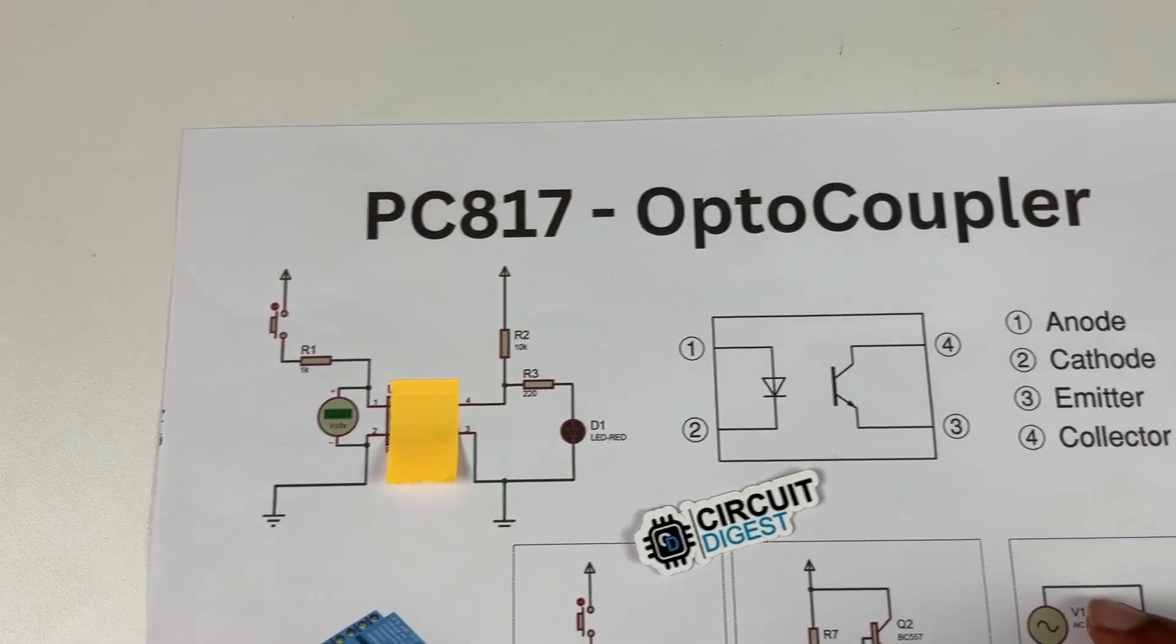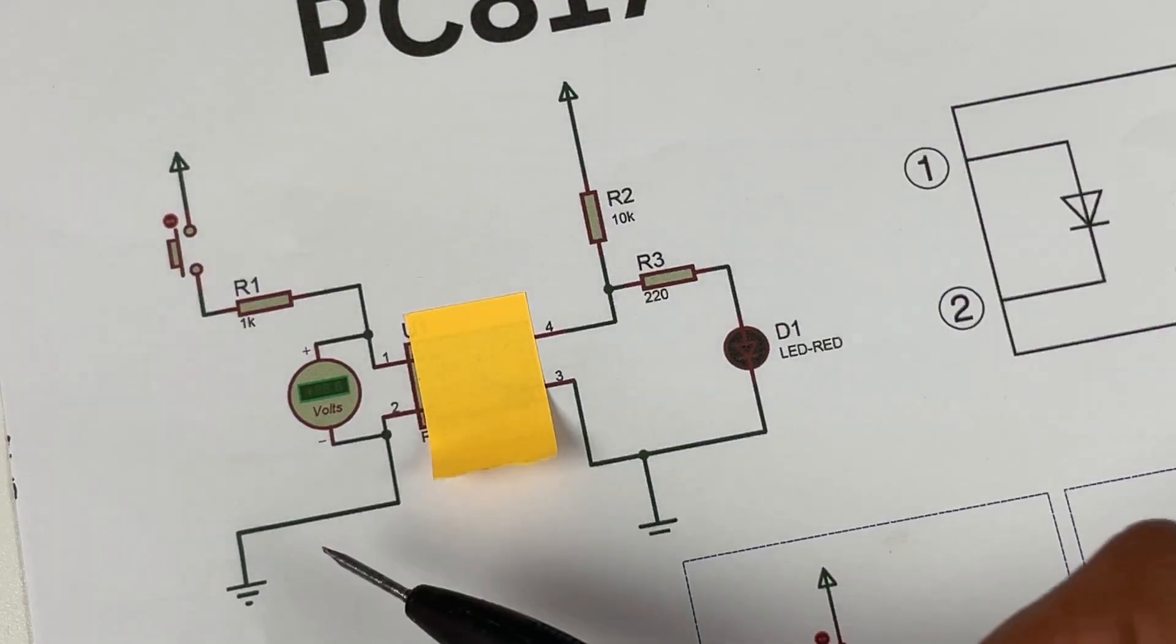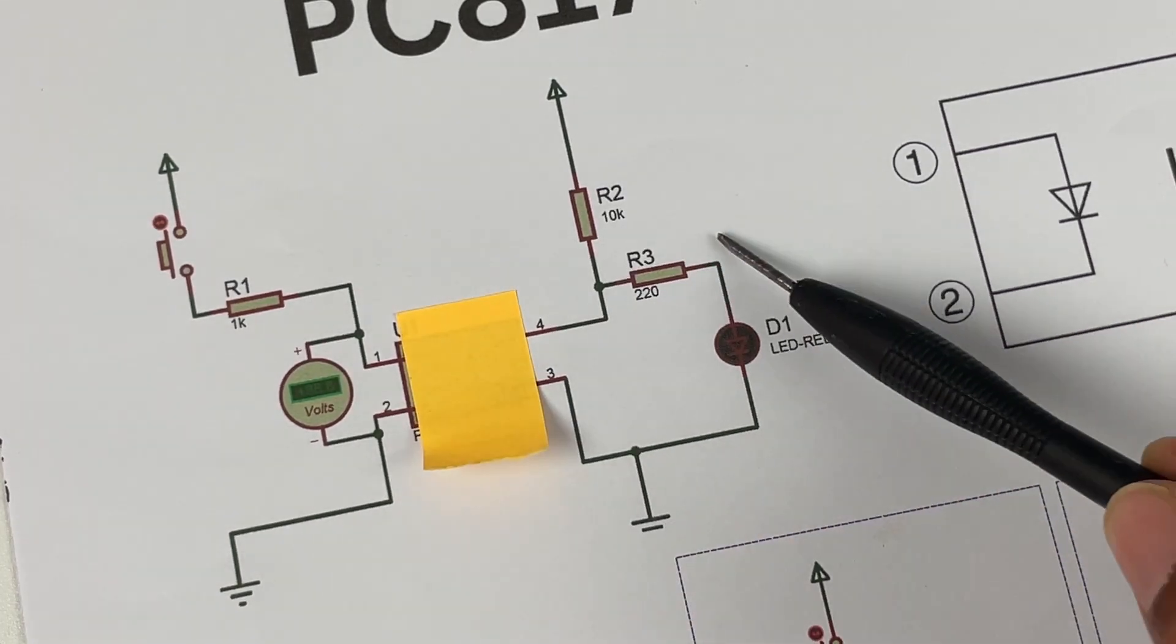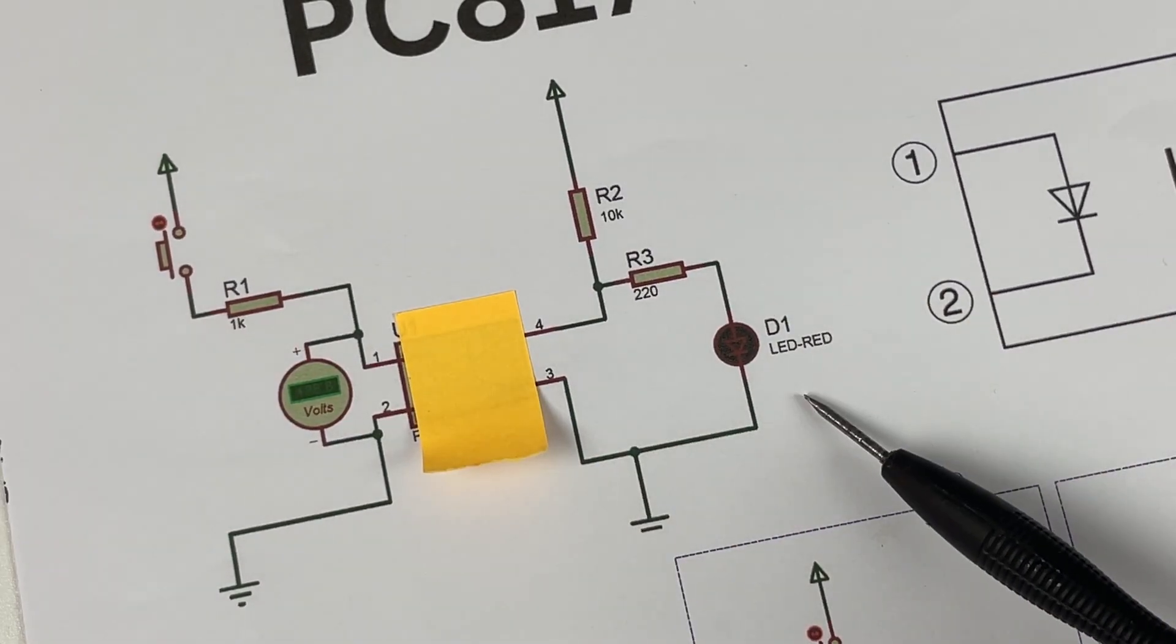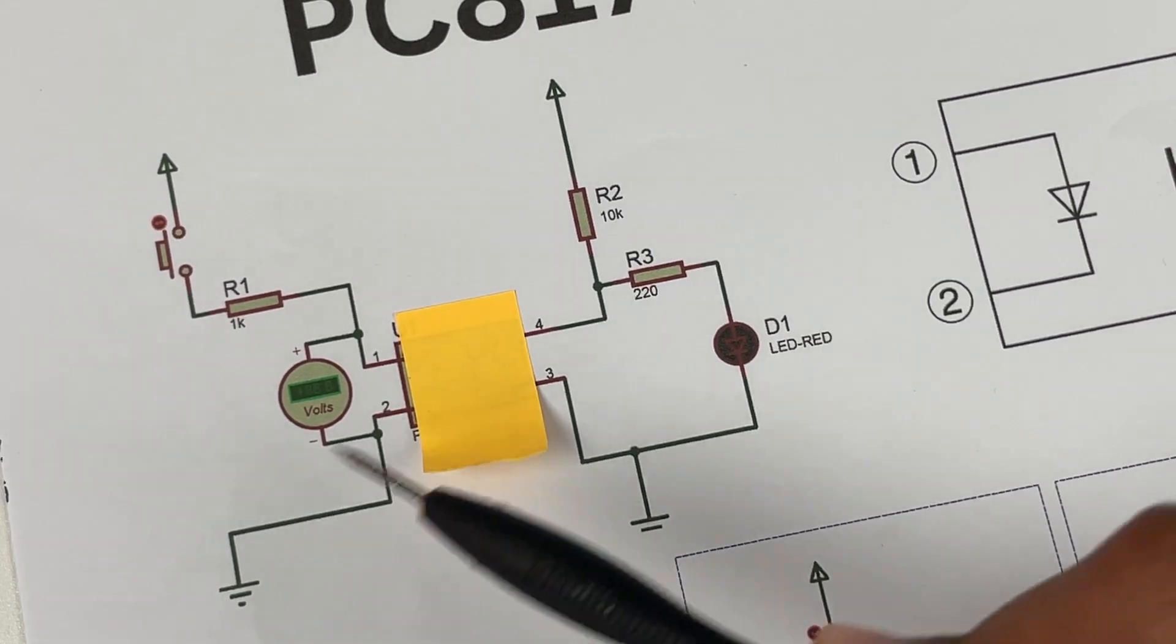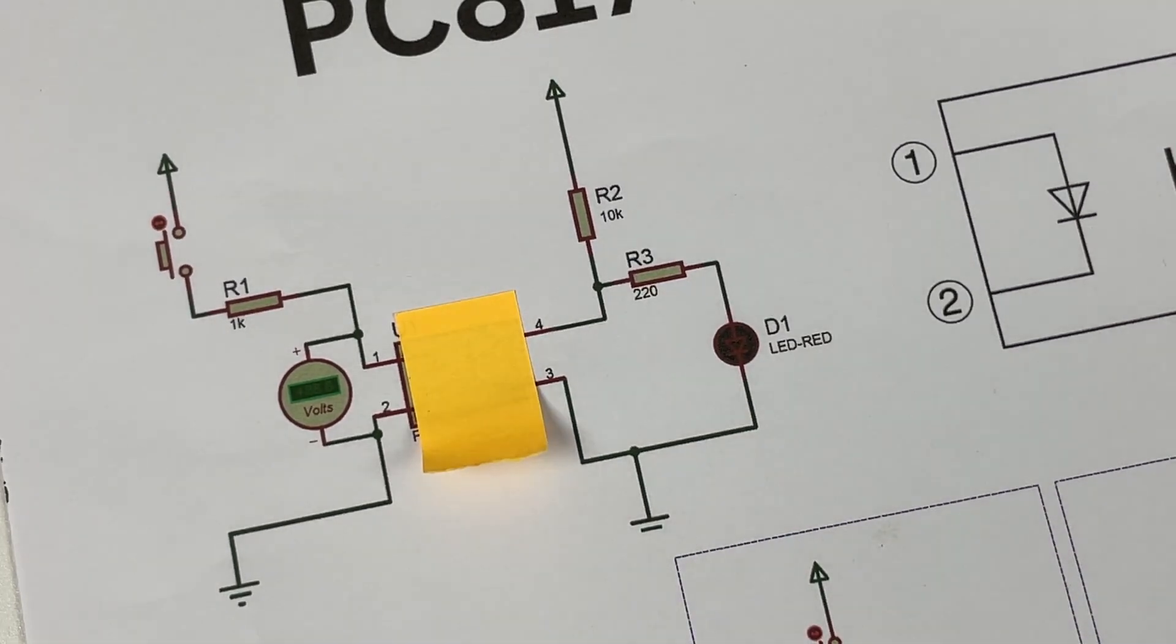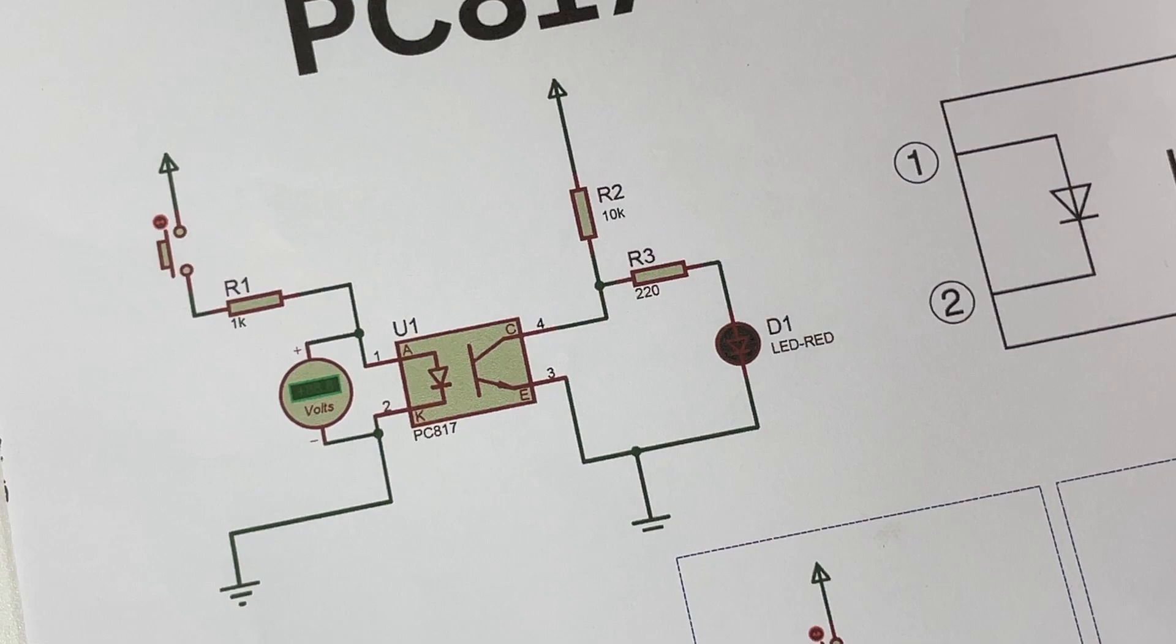To get a better understanding let's take a look at this circuit diagram. Consider these as two separate circuits. Now I want to press the button here and control this LED but I want these two circuits to be physically isolated. Can I do this? Yes, using an optocoupler.